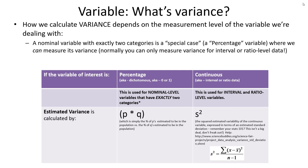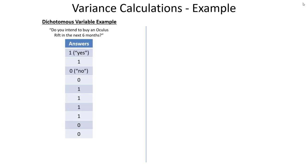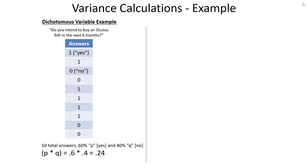Let's illustrate how both calculations work in practice. Imagine the survey question: 'Do you intend to buy an Oculus Rift in the next six months?' with 10 responses. People could only answer yes or no — ones coded as yes, zeros as no. The way we calculate variance for a dichotomous variable is simply P times Q, where P is the percentage of yeses and Q is the percentage of nos. So 0.6 times 0.4 results in 0.24 — that's all it takes.